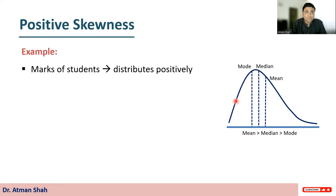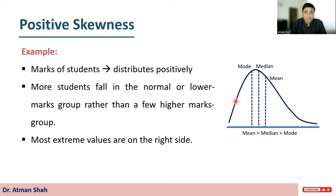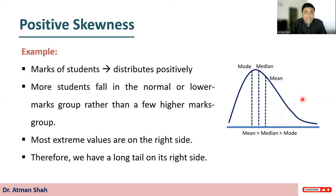Let's see an example. Suppose marks of students follow a positively skewed distribution. More students fall in the normal or lower marks group rather than a few in the higher marks group. So most extreme values are on the right side of the mean, giving us a long tail on the right side. The marks of most students lie to the left of the mean. That is the idea of positive skewness.